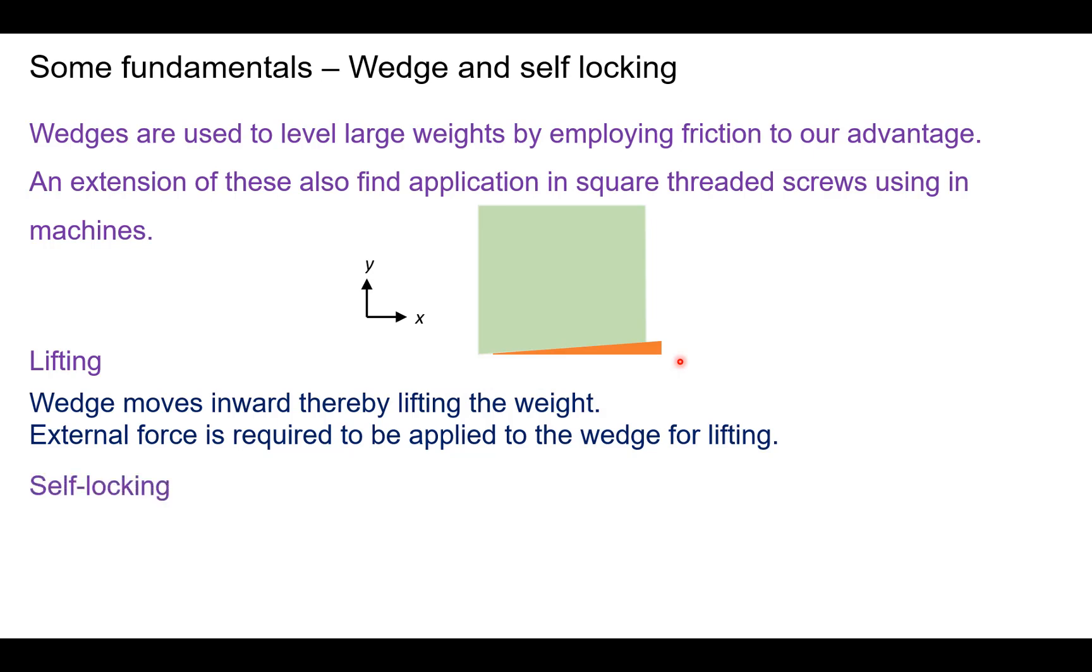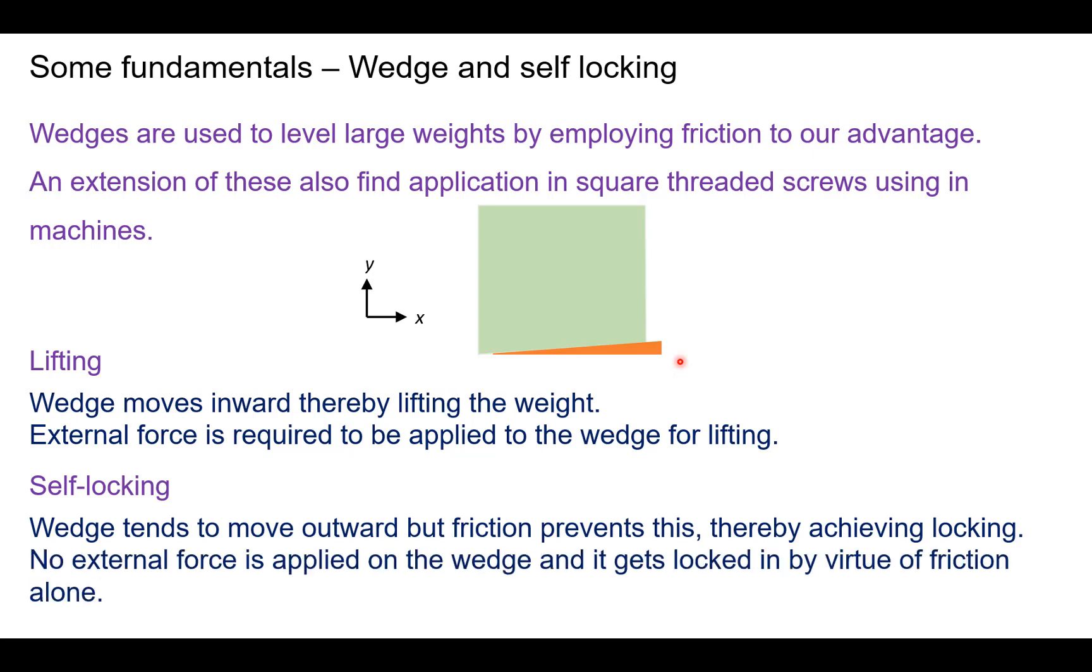Another application of this concept deals with self-locking where the wedges tend to move outward but the friction prevents it thereby achieving a locking condition. It should be noted that in the case of self-locking, no external force is required to be applied to the wedge and it gets blocked solely by virtue of friction as it can be seen from this diagram where the frictional force gets mobilized as the wedge tries to move towards the right.